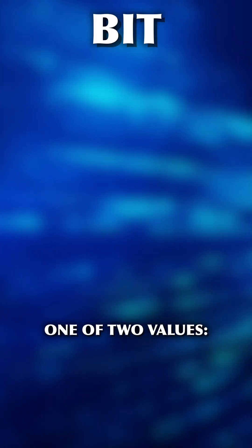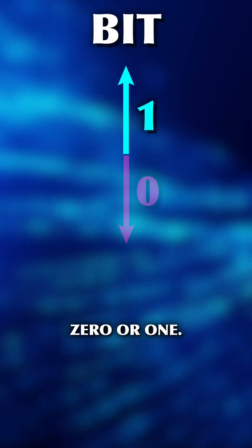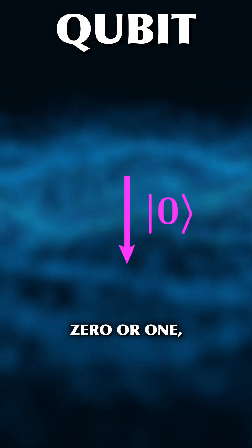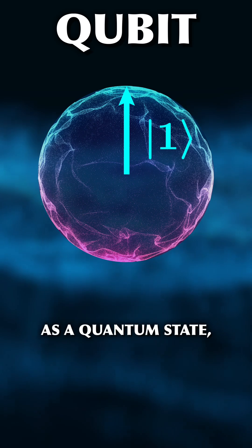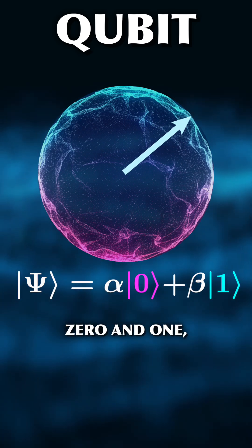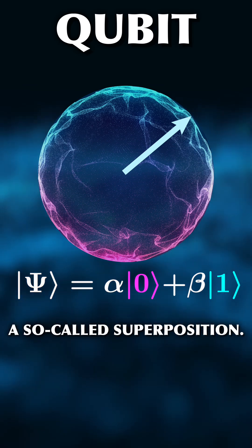A regular bit can only take on one of two values, zero or one. A qubit is a quantum system that can also be zero or one. But as a quantum state, it can also be any combination of zero and one, a so-called superposition.